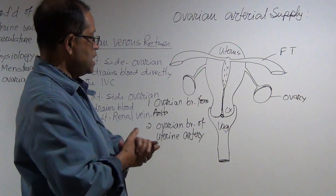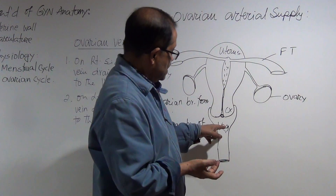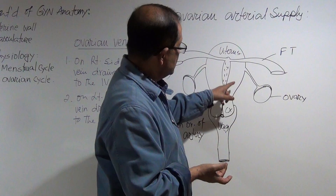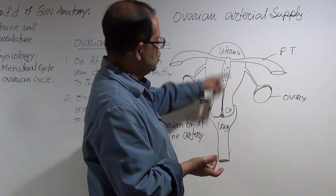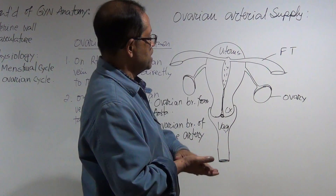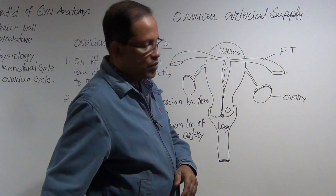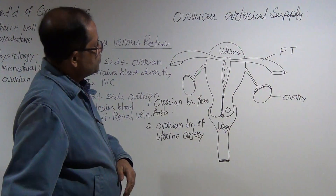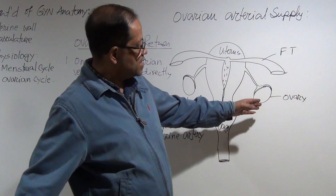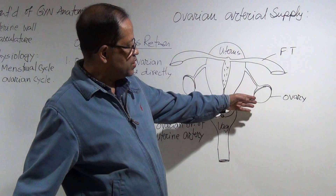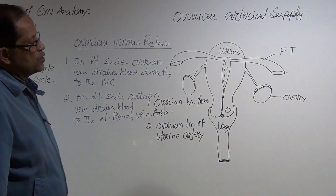Venous drainage from the uterus, vagina, and fallopian tubes all goes into the internal iliac vein, which then drains into the common iliac vein and finally the IVC.